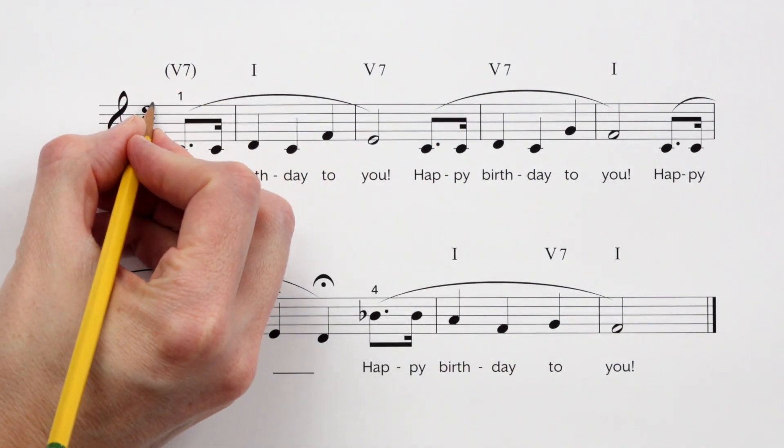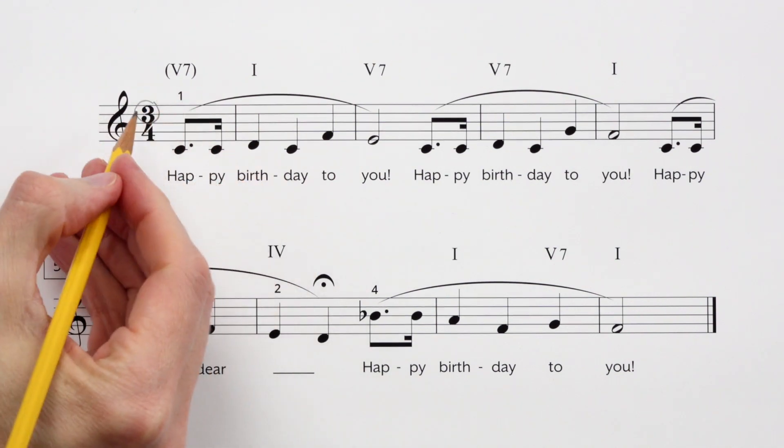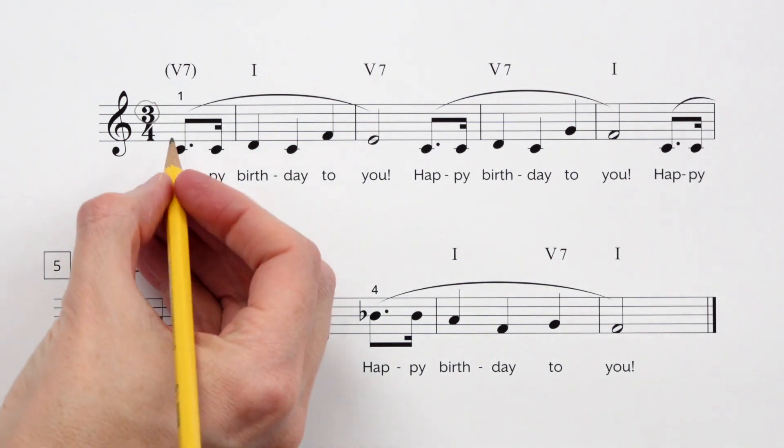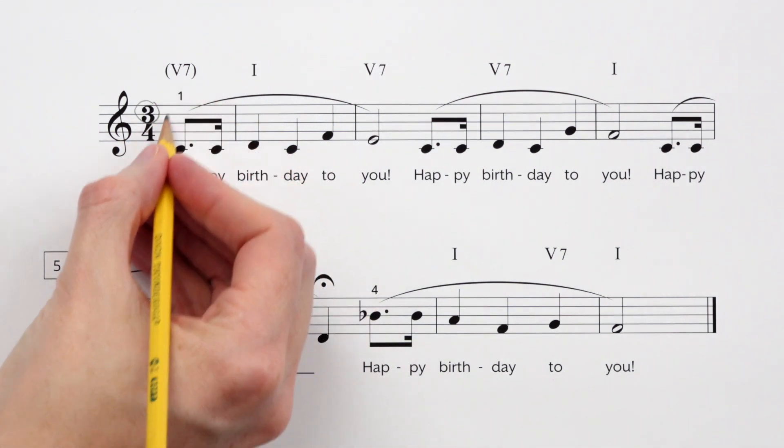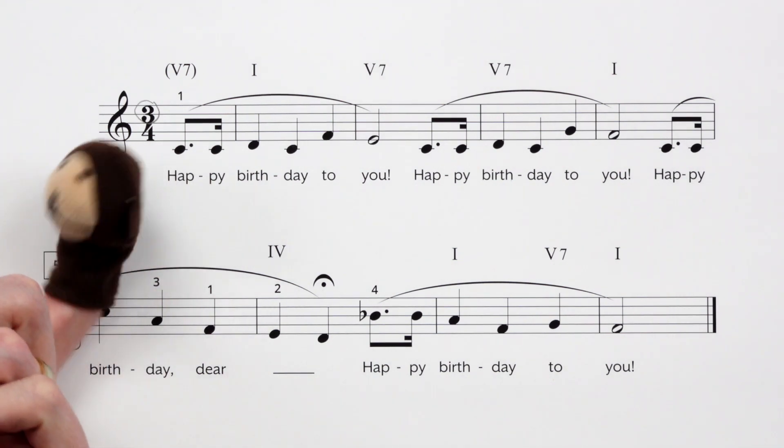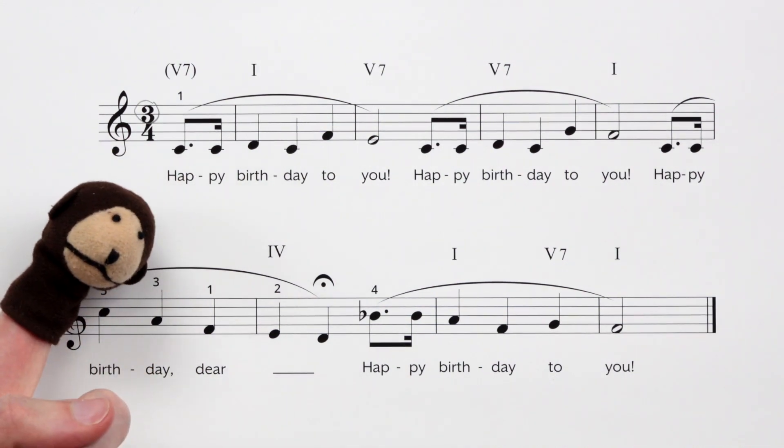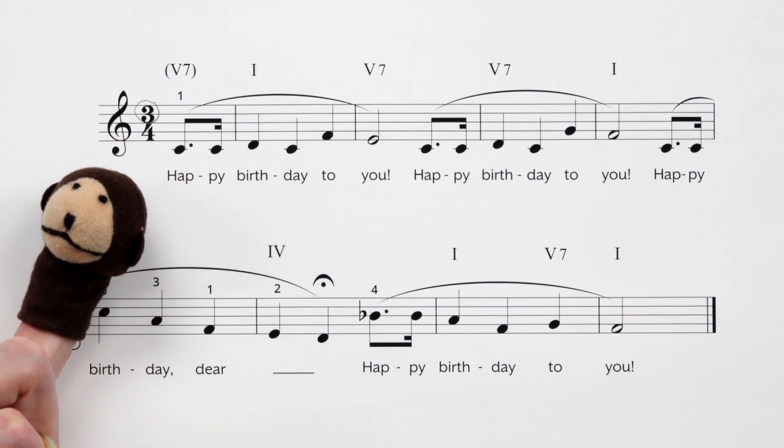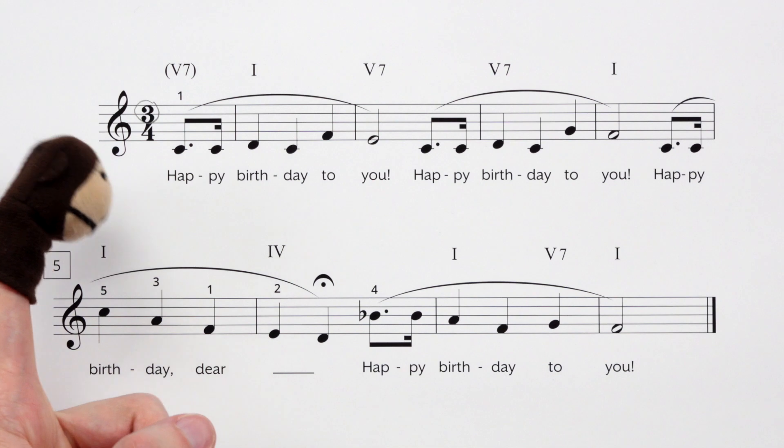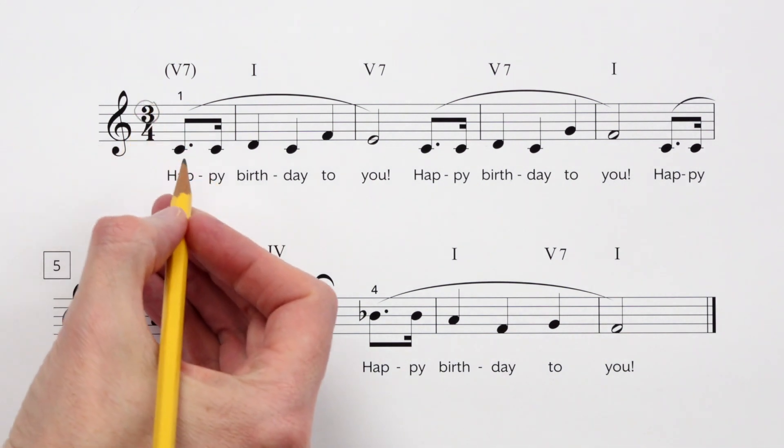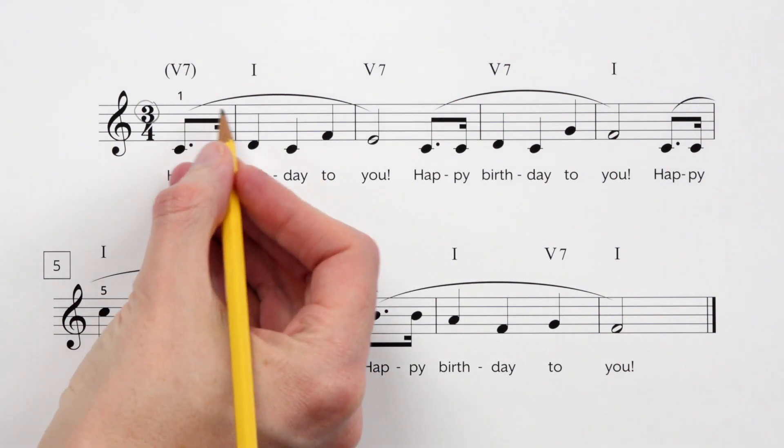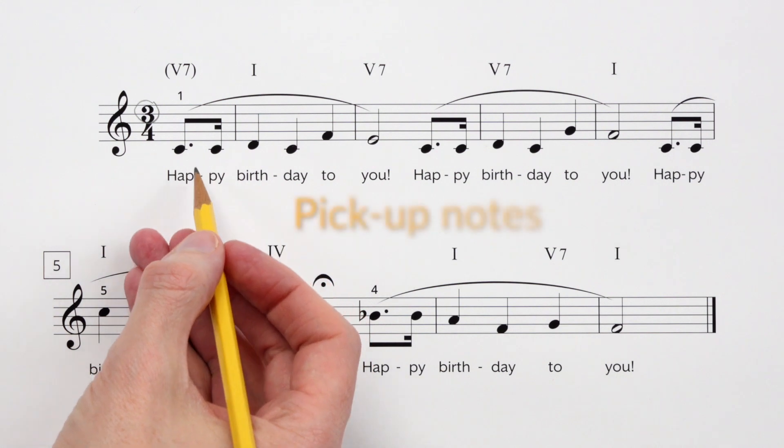I always like to check our time signature. How many beats per measure? That top number tells us we'll have three beats per measure, but hey wait a minute, this first measure only has one beat. Did somebody steal some beats here? Don't worry I wasn't blaming you monkey. Wait, you didn't take any beats did you? Oh good, I didn't think so. You see this can happen sometime in music where you have an incomplete measure at the start of a song or piece, and when you have an incomplete measure those notes are called pickup notes.